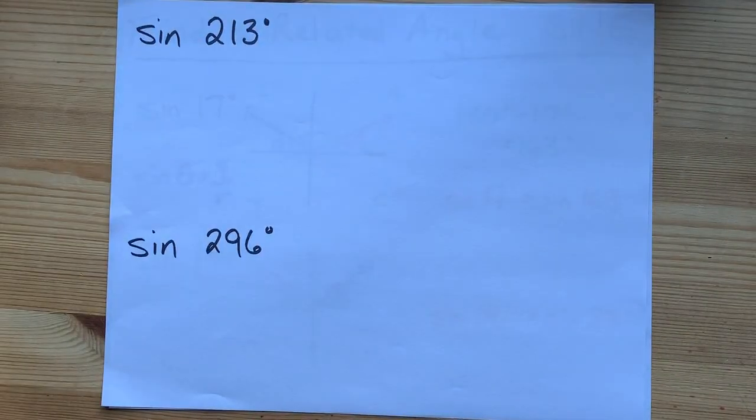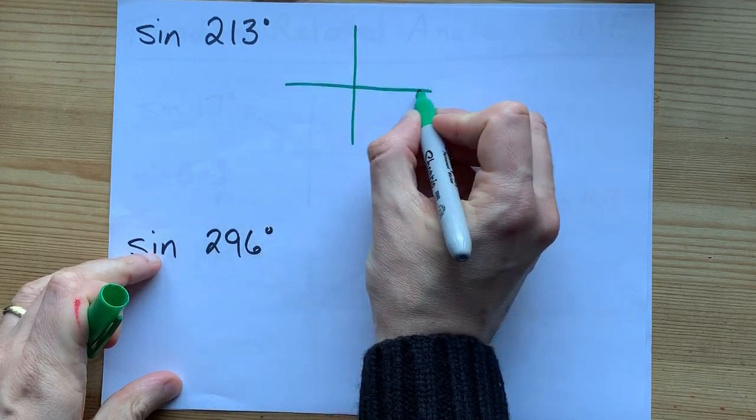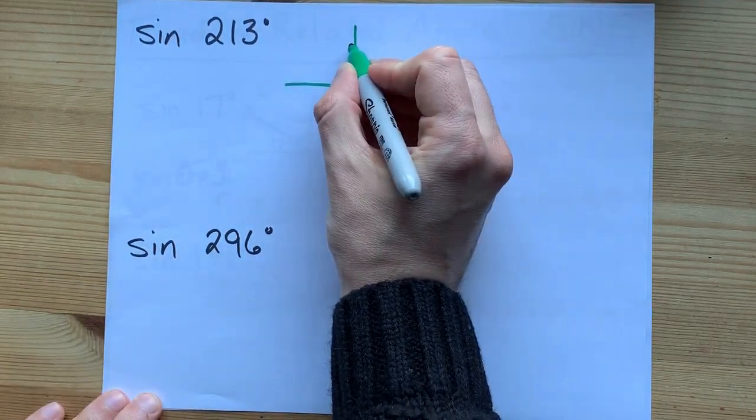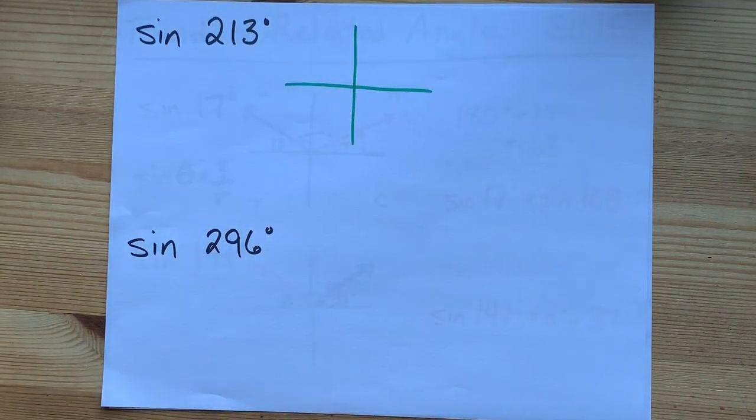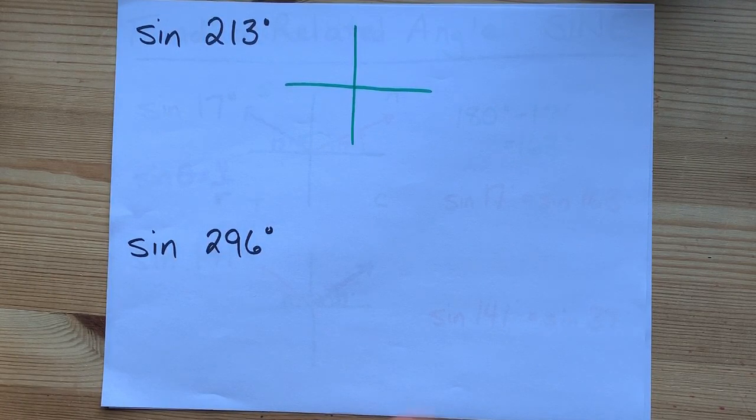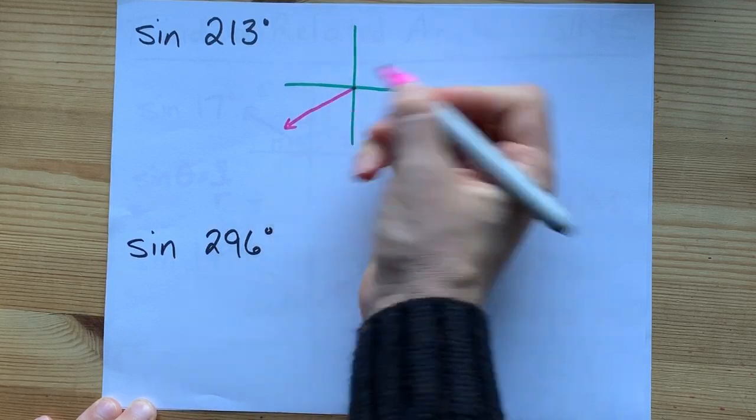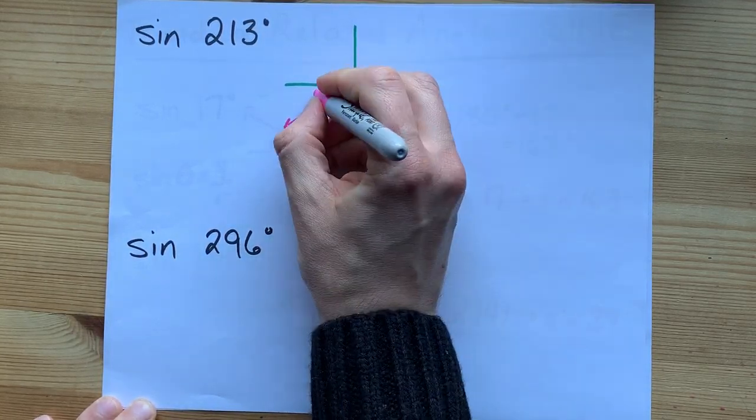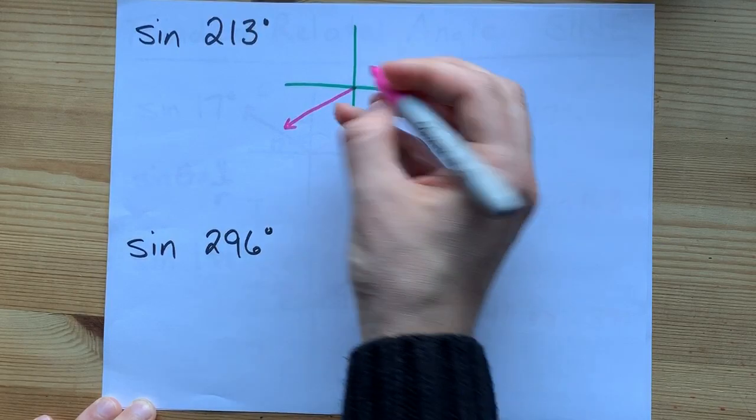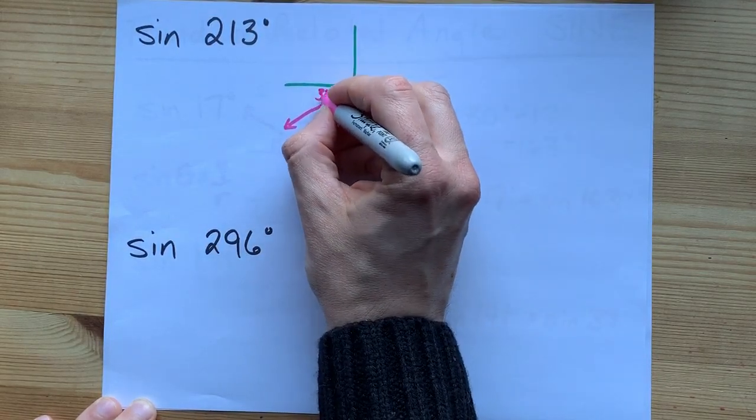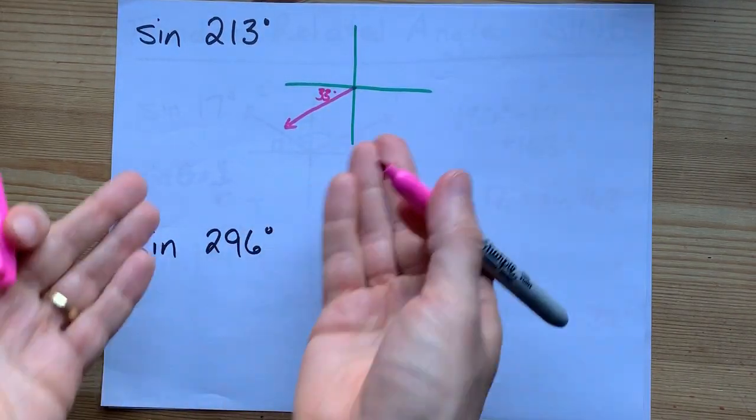Sine of 213. Well, if this is 0 degrees, 90, 180, that means 213 degrees is somewhere over here, a little bit past 180. How far past 180? Well, 213 minus 180 gives you the difference of 33 degrees. Cool.